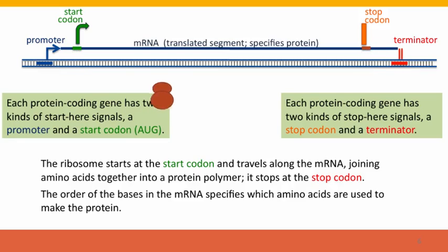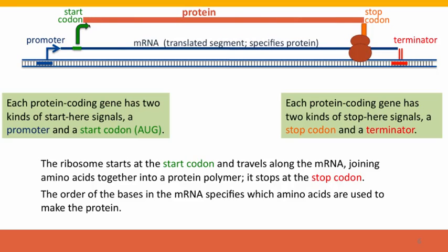So the ribosome binds to the start codon. It proceeds along the messenger RNA from its 5' end, and as it goes along, it synthesizes amino acids, assembles amino acids into the polymer of a protein, and it stops when it reaches the stop codon. The order of the bases within the DNA determines, of course, the order of the bases in the messenger RNA, and that determines the order of the amino acids in the protein. We'll talk about this in the next video.